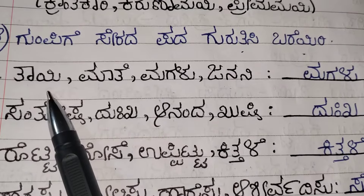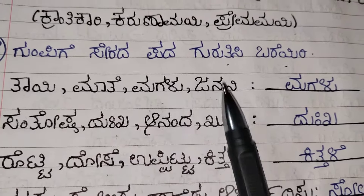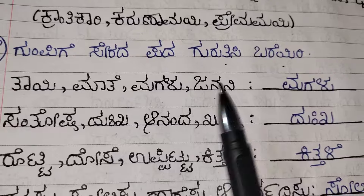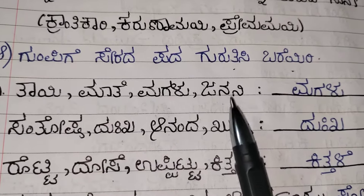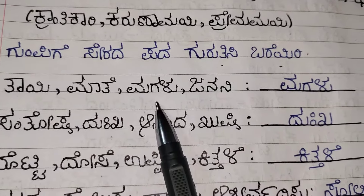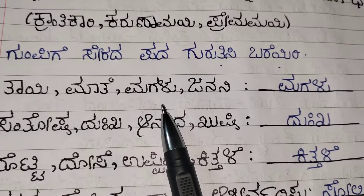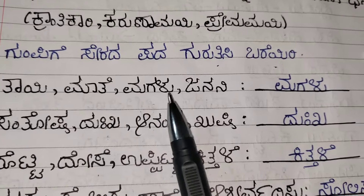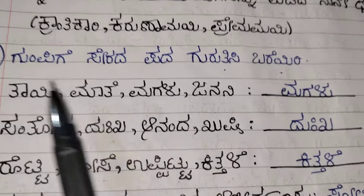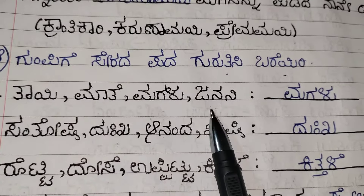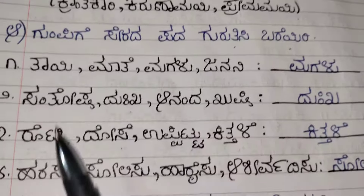The first one: Tahi, Mate, Magalu, Janani. The meaning of Tahi, Mate, Janani means mother. Magalu means daughter. So you need to choose the option Magalu. Magalu is the odd one out. Tahi, Mate, Janani means mother. Magalu means daughter.